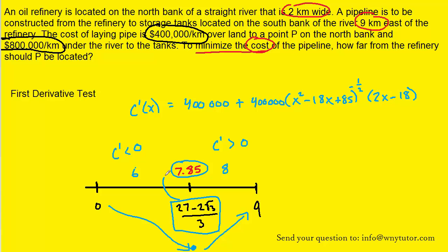And you can probably plug in just the simplified value. So it's approximately 7.85 is going to be the value of x that minimizes the cost of the pipeline.